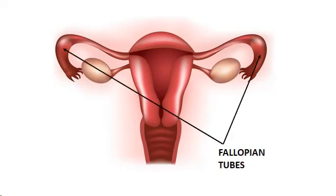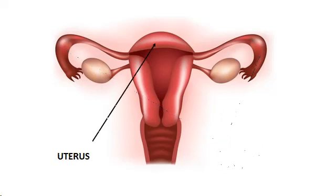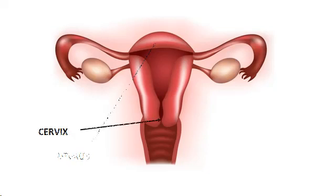Fallopian tubes are two very fine tubes that extend from each ovary into the uterus. Their main function is to contain the egg until fertilization takes place and to provide a passageway leading the sperm to the egg and the fertilized egg to the uterus. The uterus, or womb, is the hollow, muscular, pear-shaped organ located between the two ovaries. It is here that a fertilized egg develops and grows into a baby. However, if the egg remains unfertilized, the uterus sheds its lining, which leaves the body as menstrual discharge.